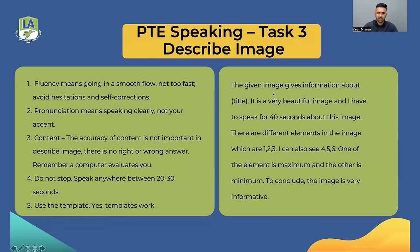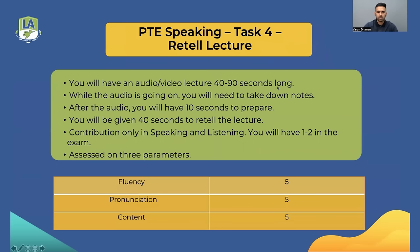Even if you get a landscape image, you apply the same template: 'The image gives information about landscape. It is a very beautiful image. There are different elements in the image which are sky, garden, and rocks. I can also see top, bottom, and left. I can also see blue, green, and white. One of the element is maximum and the other is minimum. To conclude, the image is informative.' In Describe Image, you don't really need to focus on the accuracy of the content — focus on flow and speaking clearly.